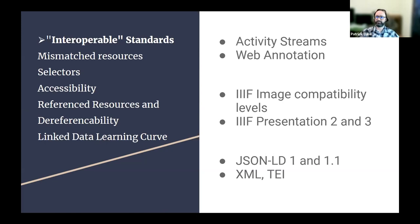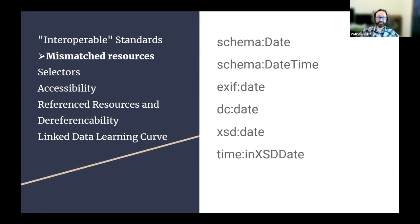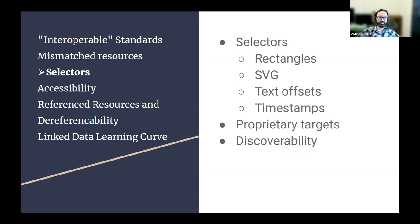Even within IIIF, moving from Presentation API 2 to Presentation API 3 changes the way some things are handled — ranges and sequences mean things slightly differently, labels need to be handled differently, and that can cause issues if you're trying to support things across all those resources. If you're collecting from places that aren't all within your own repository, you can have all these different fixed vocabularies that describe things that feel like the same thing to a human — for example, identifying something as 'the 11th century.'